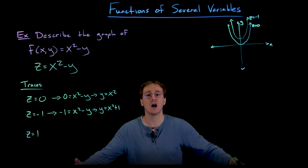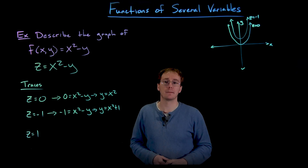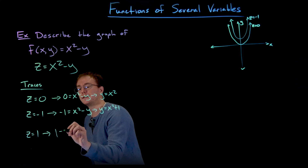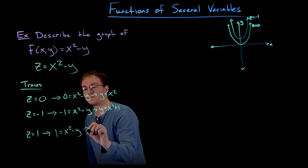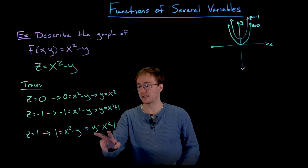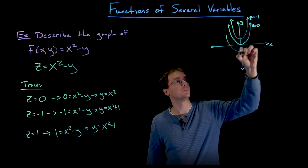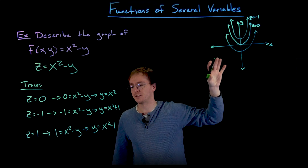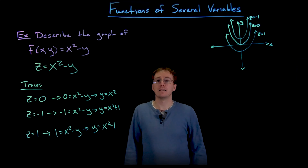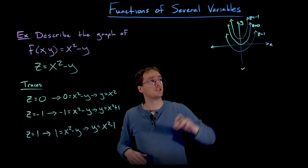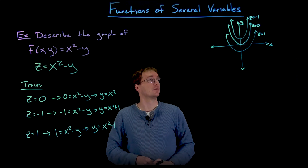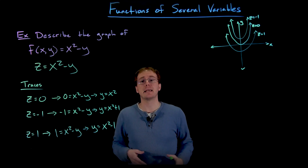When we take a step up from the xy plane and look at z equals positive one, our equation becomes 1 equals x squared minus y, or after solving for y: y equals x squared minus one. That's still a parabola, but now shifted down one unit. So the level curve corresponding to z equals positive one is a concave-up parabola with vertex at (0, negative one). We're starting to get a glimpse of the shape of this three-dimensional surface.